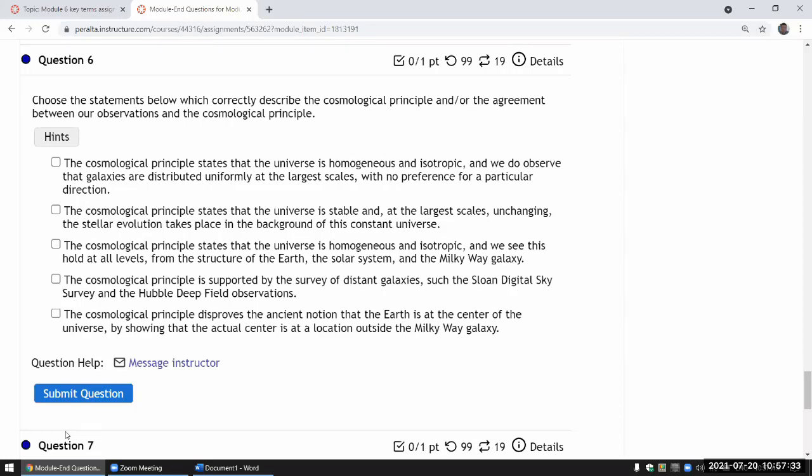So the cosmological principle says that the universe is homogeneous and isotropic. And yeah, that is correct. Let me see here. It doesn't say the universe is stable.